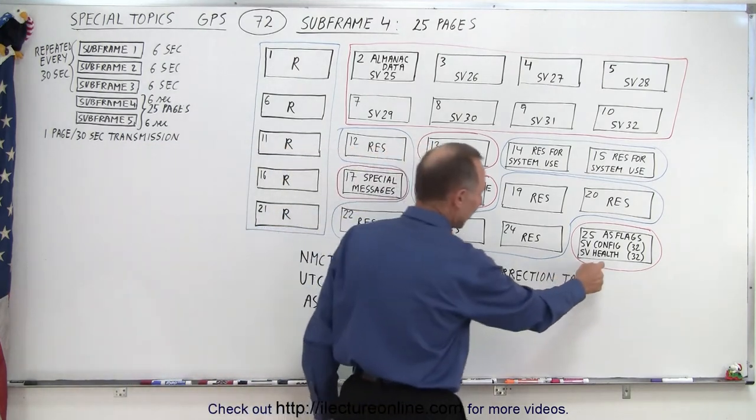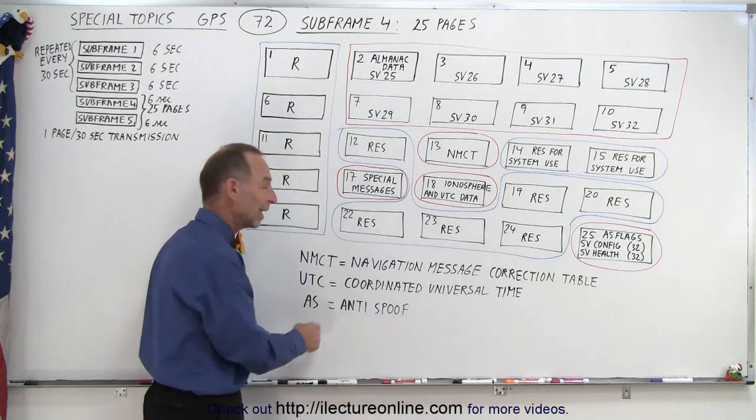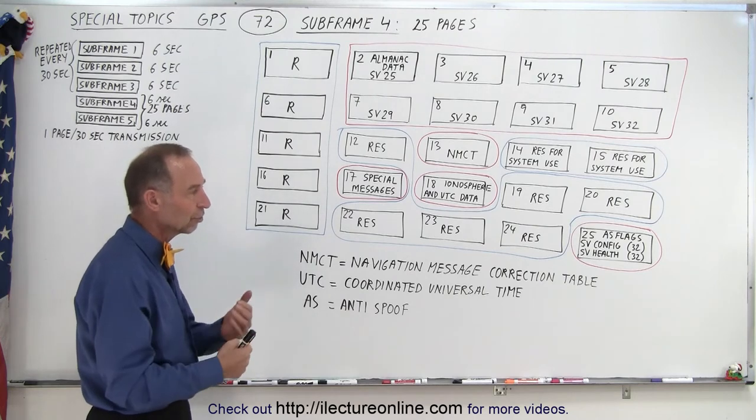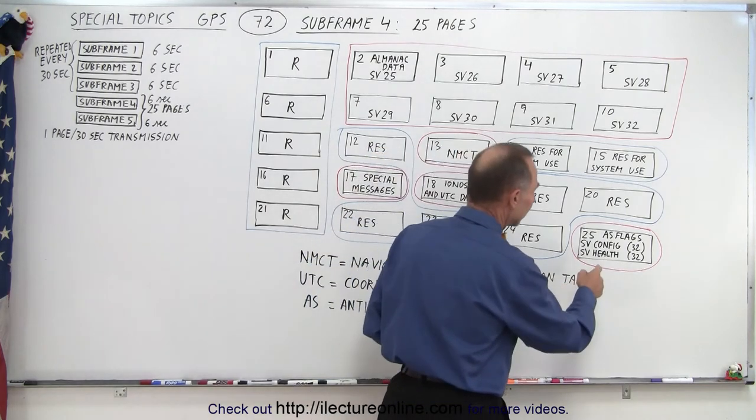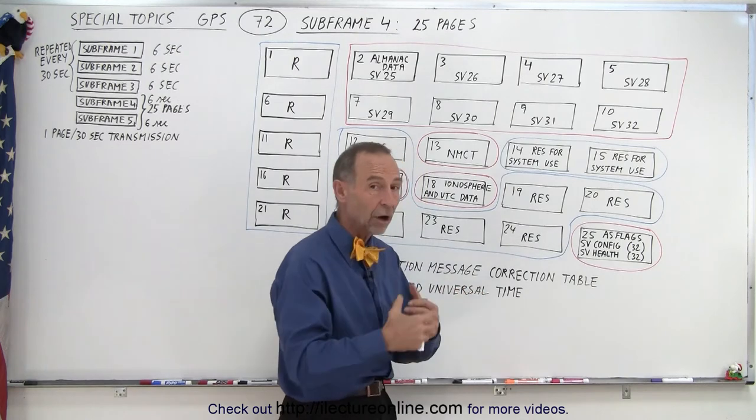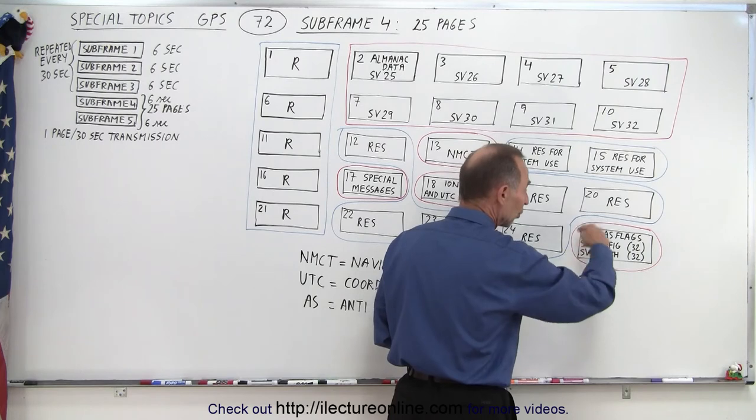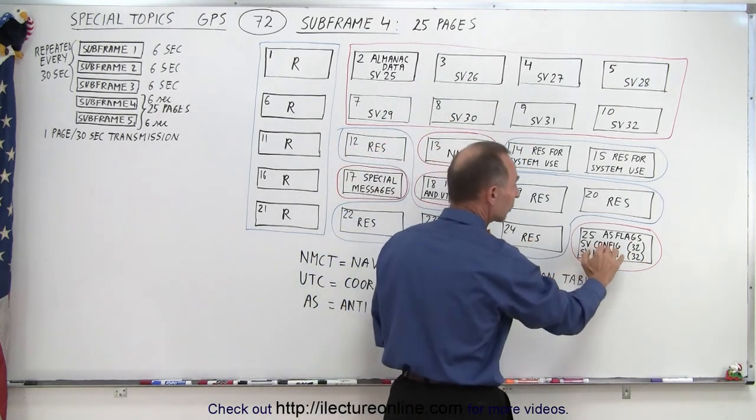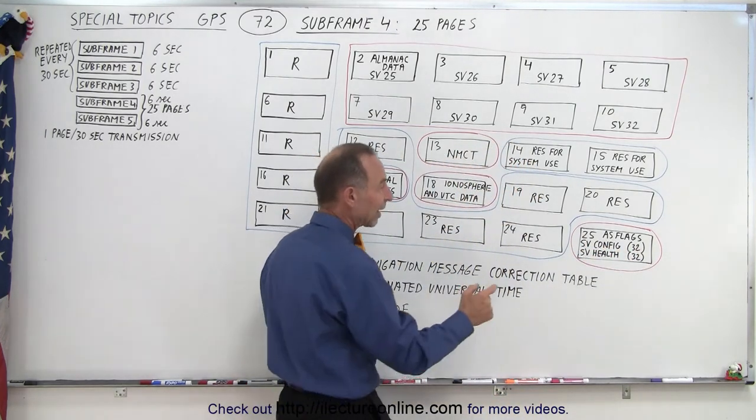Then finally, the final page of the 25, page number 25, contains the AS flags. AS stands for anti-spoof, so there are flags in there that tell you about the conditions of the anti-spoof capability of the satellites. And then it also has what we call SV configuration information, so how these satellites are configured for all 32 satellites. So this one page, the last page in subframe 4, contains all the configuration data of all the satellites in the constellation.